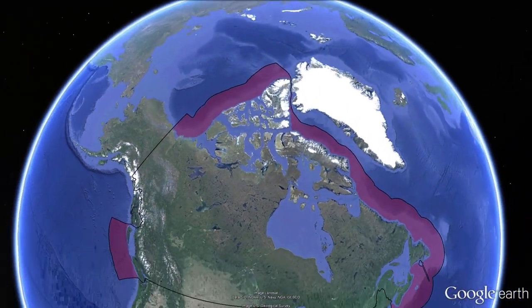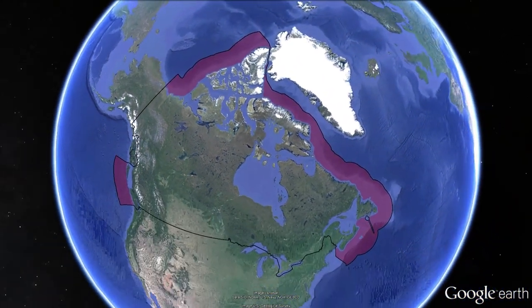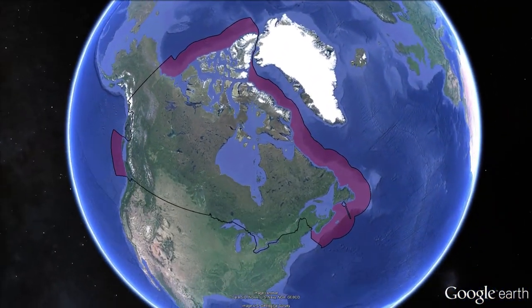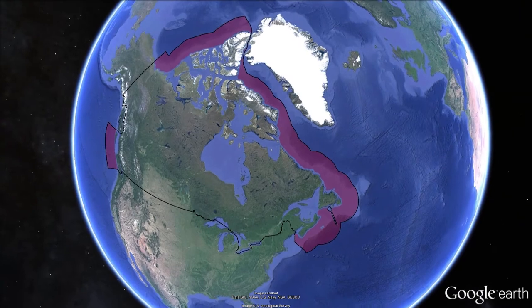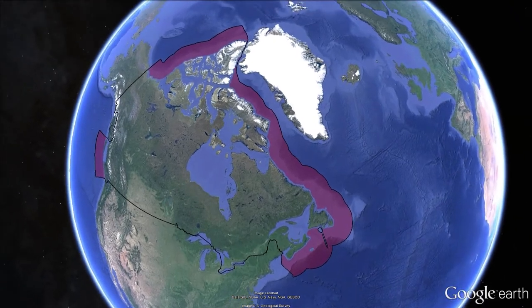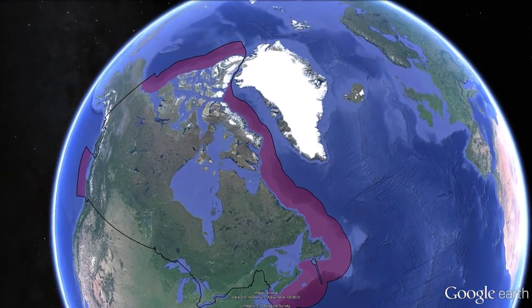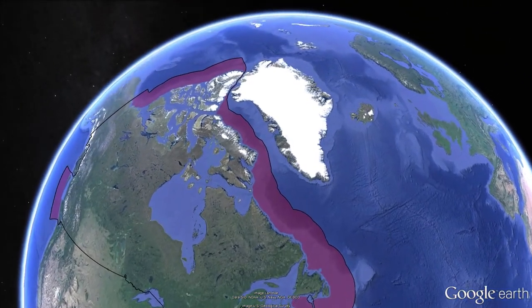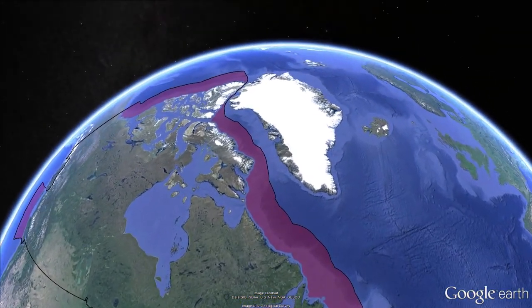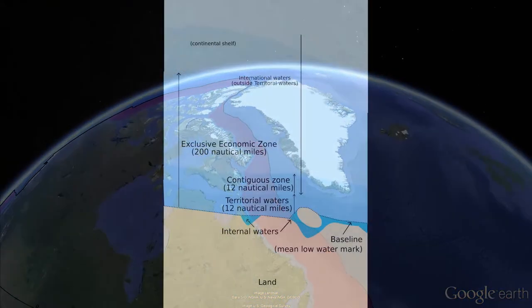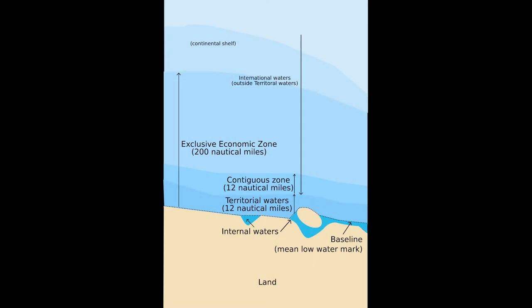Everyone is familiar with land-based borders, but not everyone is aware that there are many borders or limits that occur over Canada's offshore. For example, we have many maritime limits measured from the coastline, or more precisely, the low-water line.